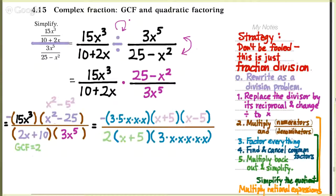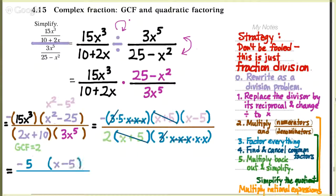This permits us to identify which factors upstairs and downstairs are common. I've got a pair of 3's I can get rid of. I've got 3 factors of x upstairs and downstairs that I can get rid of. And I also have an x plus 5 I can get rid of. So the only things that survive upstairs are a minus sign, a 5, and an x minus 5. Downstairs: a 2 and 2 factors of x.